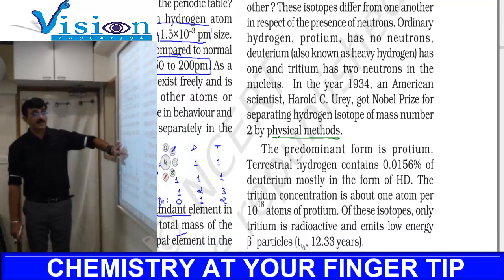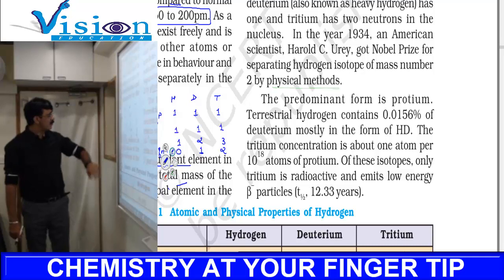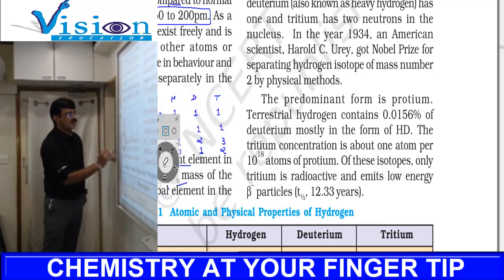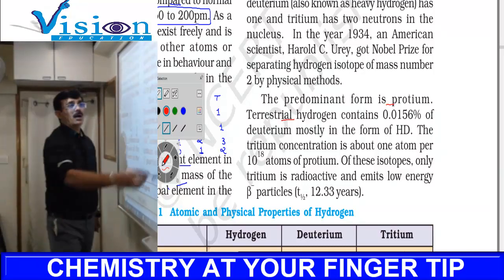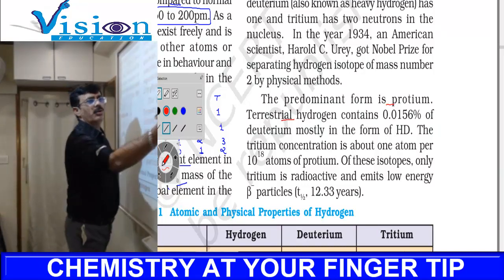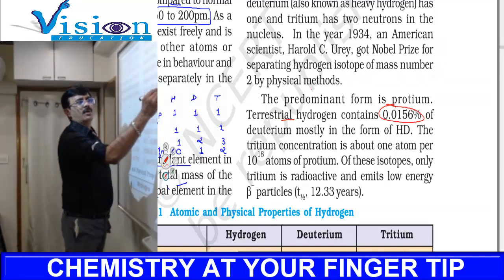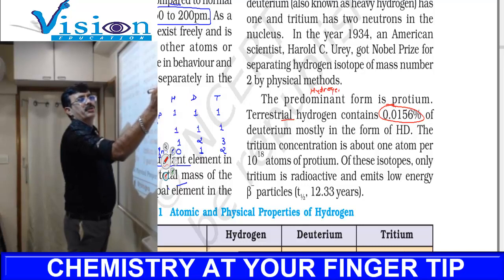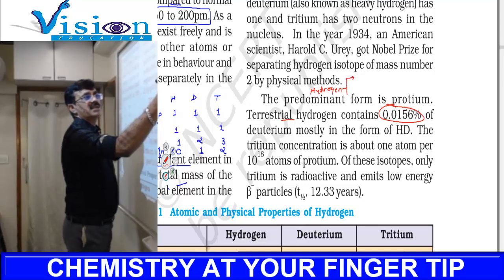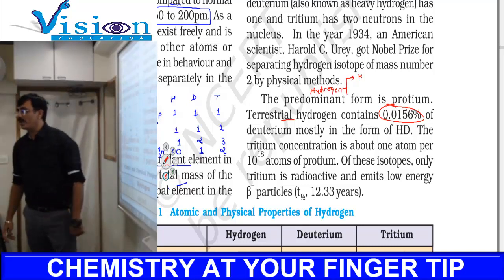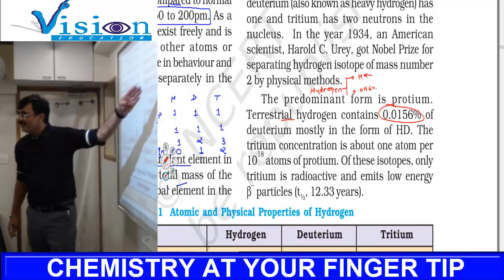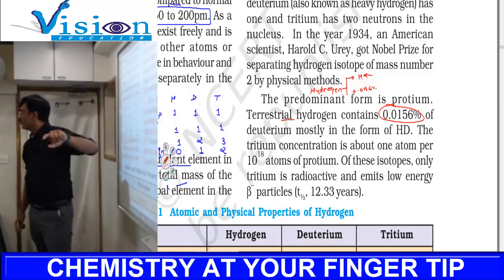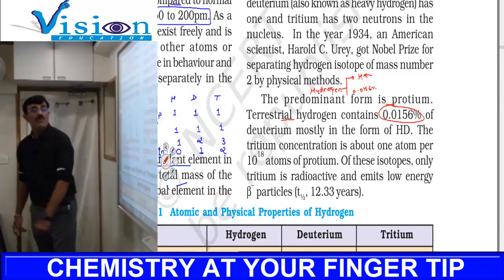Normally, if we talk about proportions of protium and deuterium: deuterium is only 0.0156 percent. If you find hydrogen in the atmosphere, maximum hydrogen is H, that is protium. Deuterium's percentage is 0.0156 percent out of 100. 99.9 percent is protium.